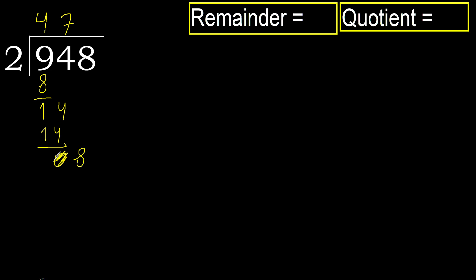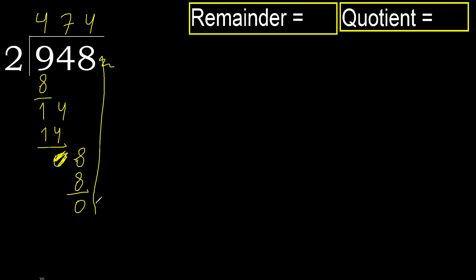Eliminate. 0. Ok, 8. 2 multiplied by 4 is 8 — 8 is not greater. Ok, subtract. Next, there is no number, therefore finish it.